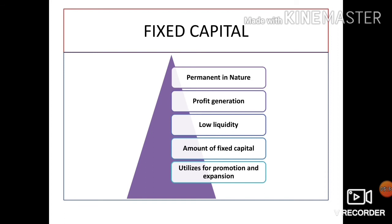Amount of fixed capital: the amount of fixed capital of a company depends on a number of factors such as the size of the company, nature of business, method of production, and finance. A manufacturing company such as a steel factory may require relatively large finance when compared to a service organization such as a software company or an educational institution. So the amount of fixed capital varies with the type of business.